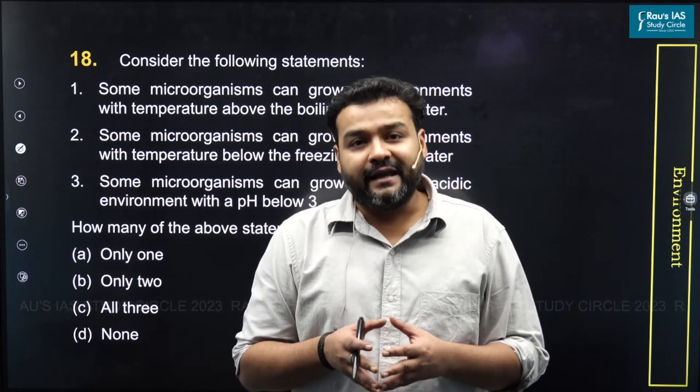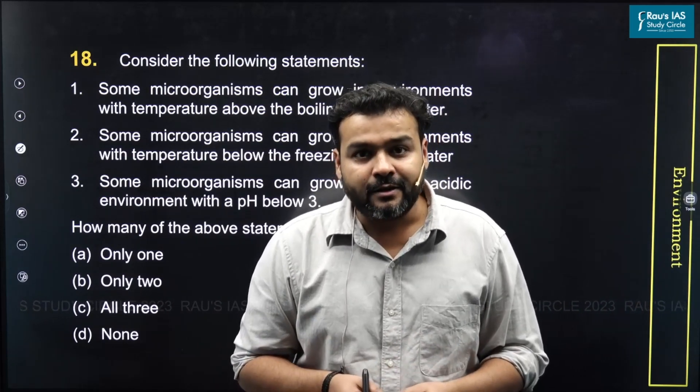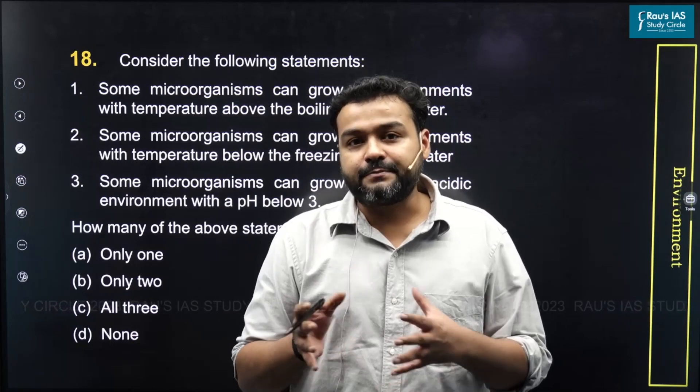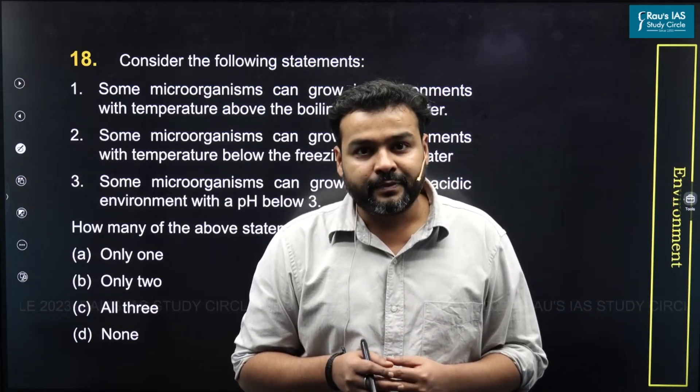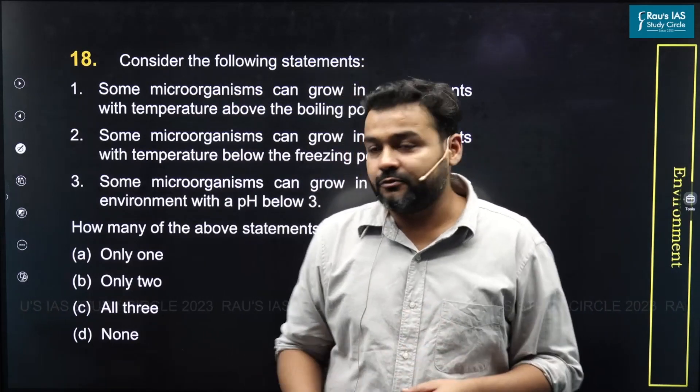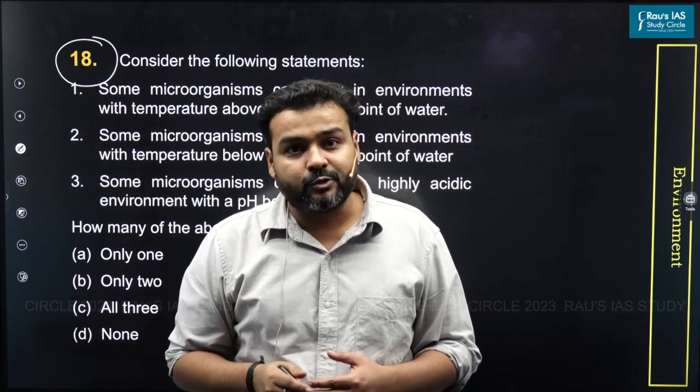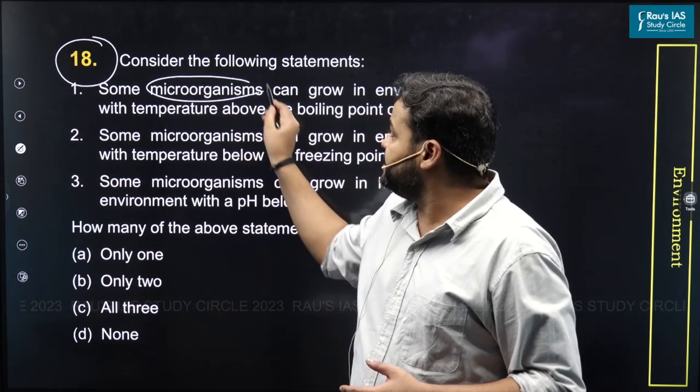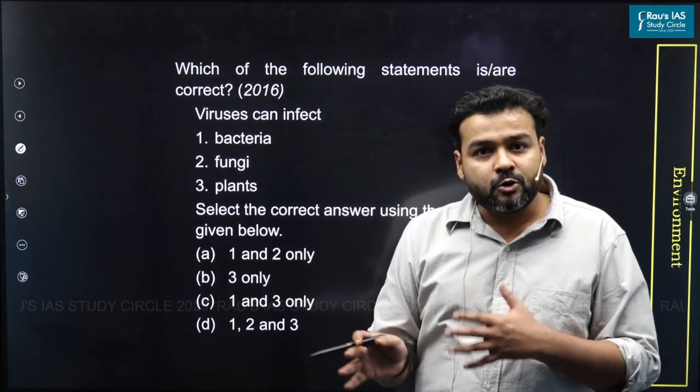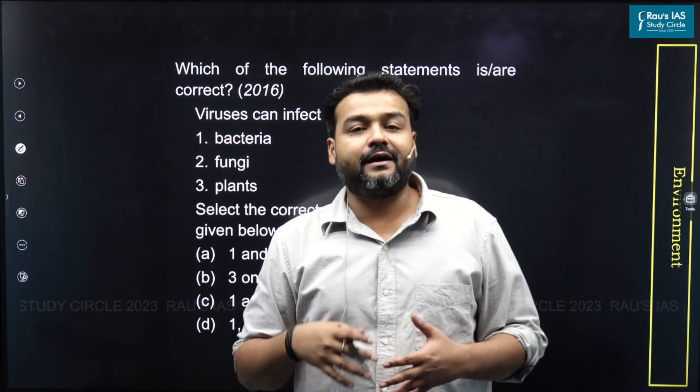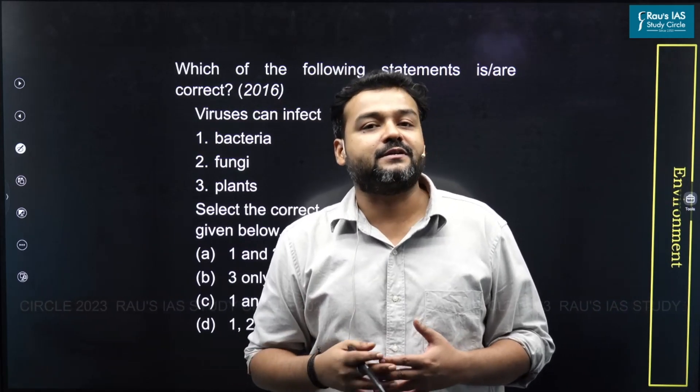Some questions in the environment and ecology section were aimed at testing the conceptual clarity of students. One such question was question number 18 of set A, which was related to the properties of microorganisms. Microbes and microorganisms have been a recurring theme in UPSC prelims examination.